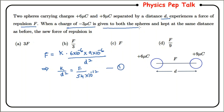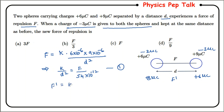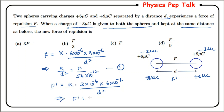Next, a charge of minus three micro coulomb is given to both the spheres. So the first sphere gets six minus three equals plus three micro coulomb, and the second sphere gets nine minus three equals plus six micro coulomb. The new force F dash equals k times three times ten to the power of minus six times six times ten to the power of minus six, divided by d squared.